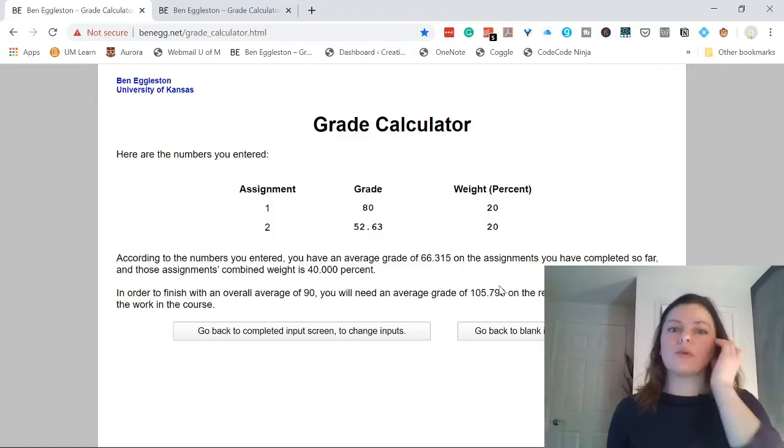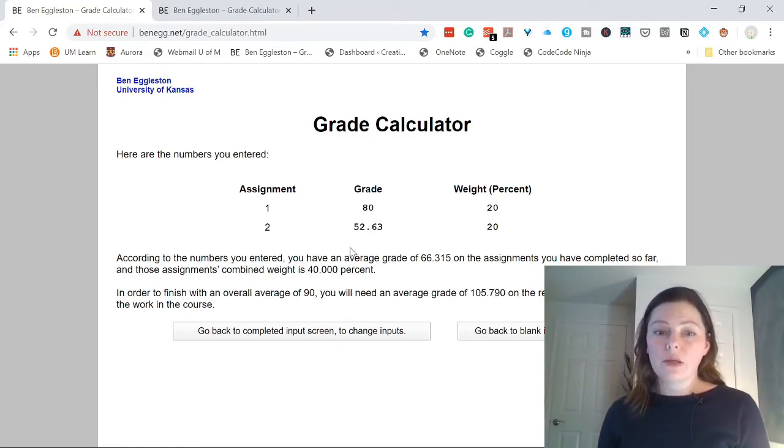Like, this is over 100% on each of the remaining three evaluation methods. So no way for me to get 90% on this class anymore.